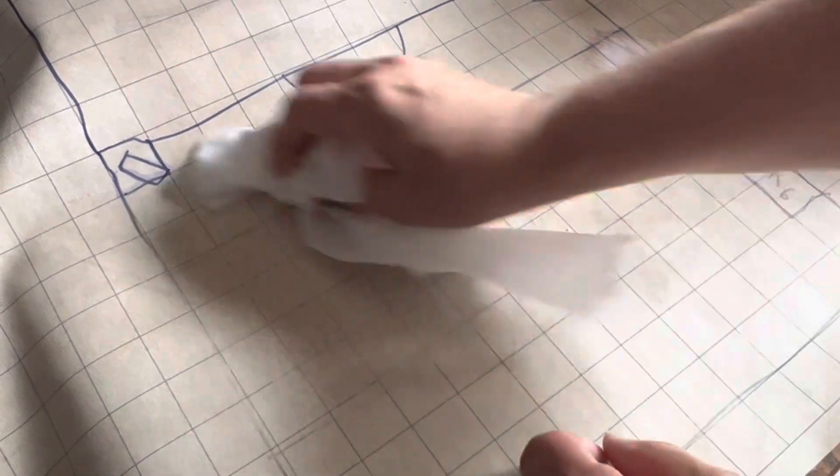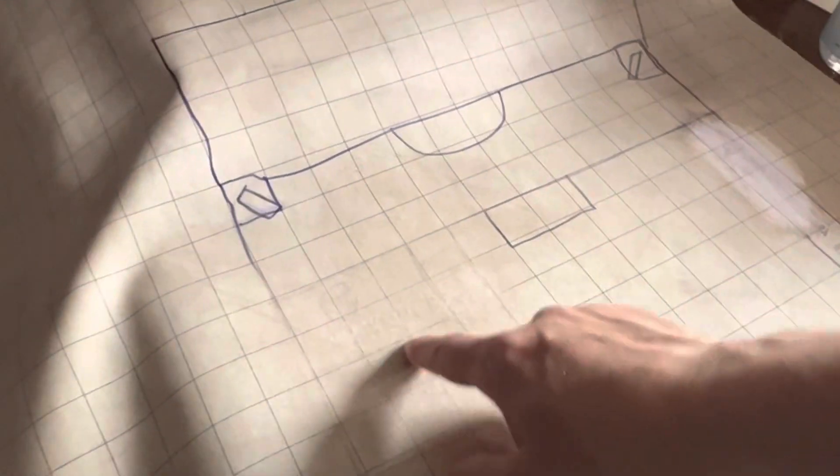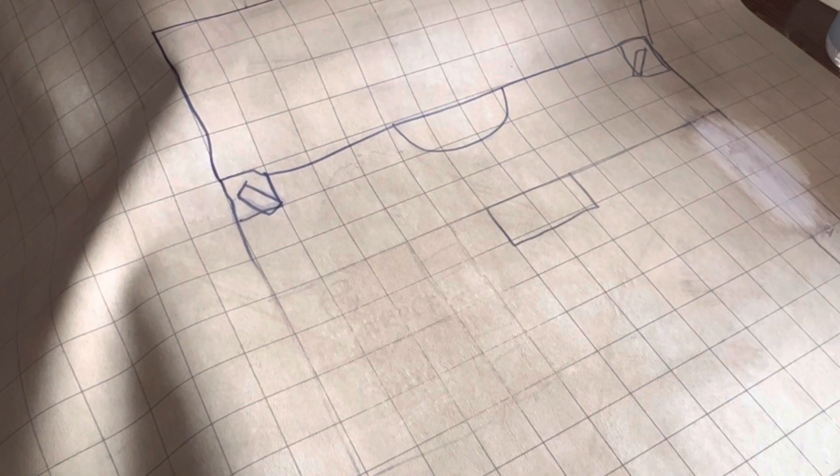I can always redraw these grid lines in permanent marker later if I wanted to, but there was writing here—you can sort of still see it—and I was just trying to get that off.